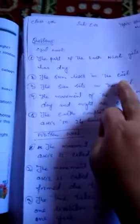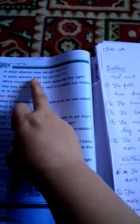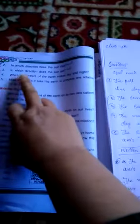In which direction does the sun rise? The sun rises in the east. In which direction does the sun set? The sun sets in the west.